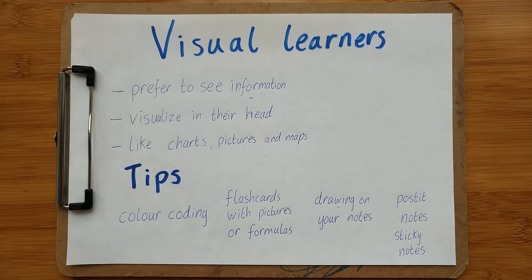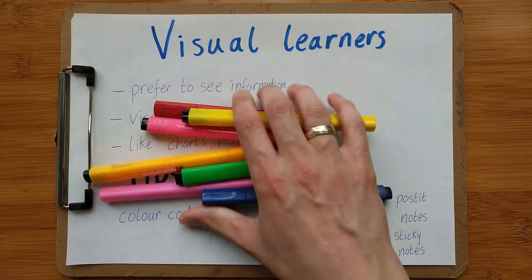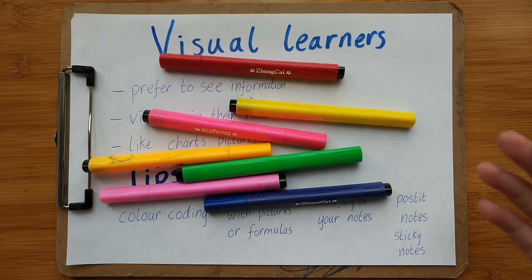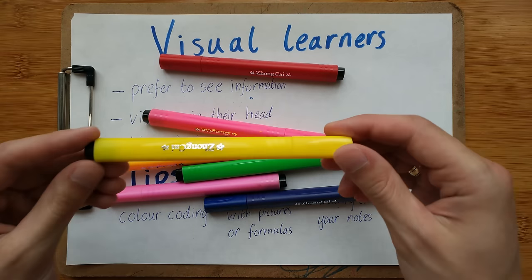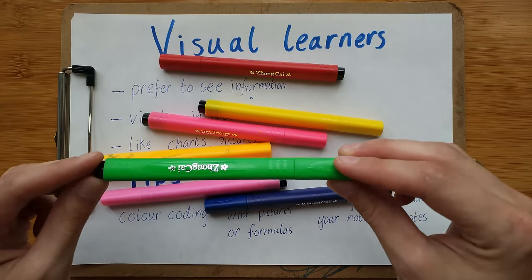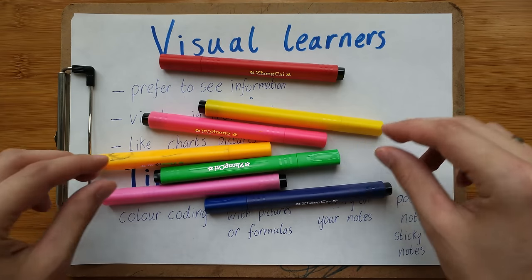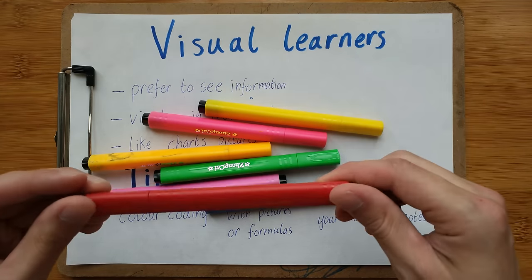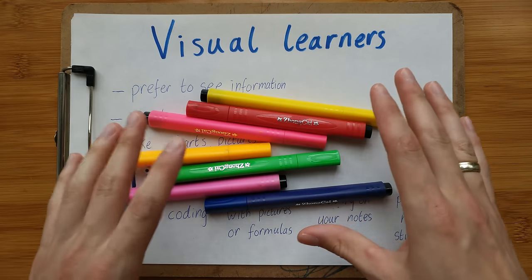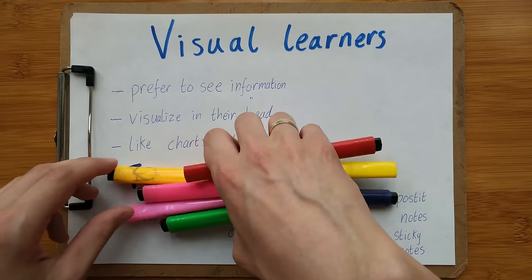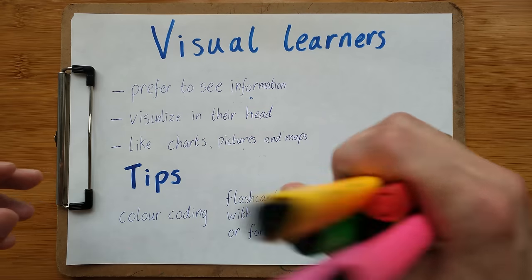The first tip is color coding — using different colors to code your notes. You could say: I'm going to make all the dates yellow, I'm going to make the verbs green, or I'm going to make the maths formula red. You can use these different colors to help you break down your notes.